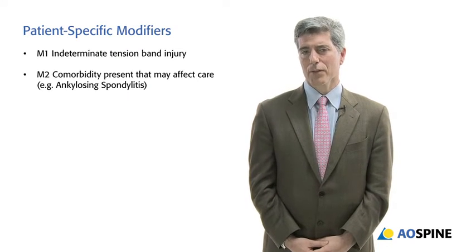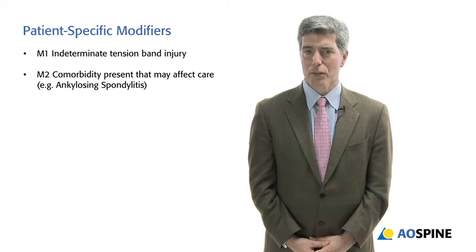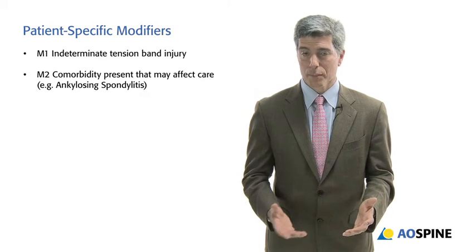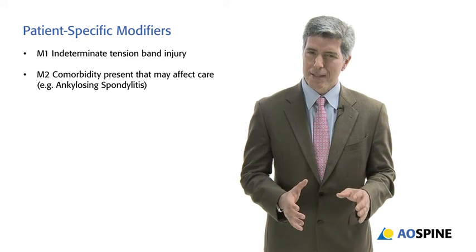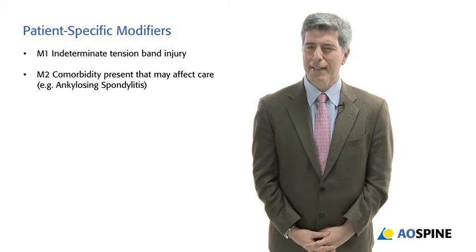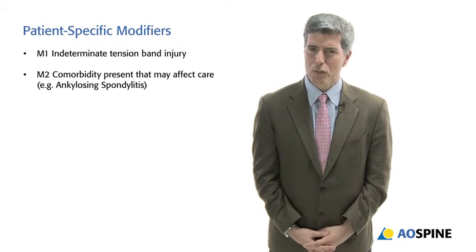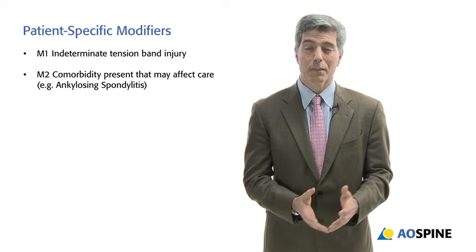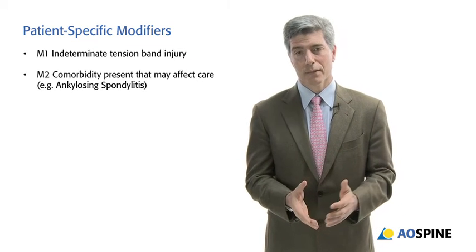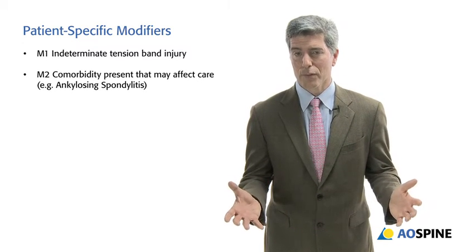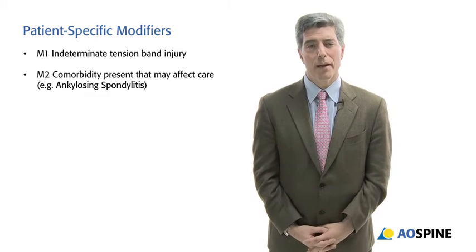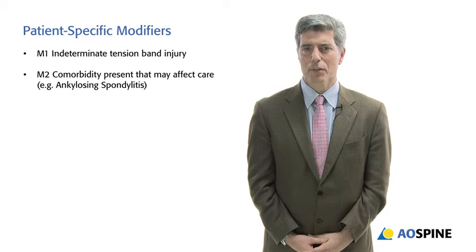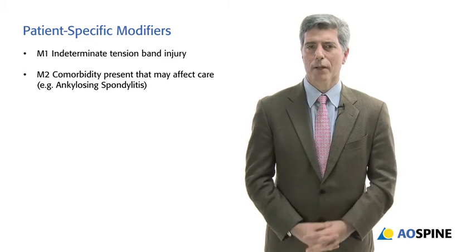There are also modifiers. If you have a distraction injury through the soft tissue, we call that a B2. Sometimes you get an MRI scan and you really can't tell if the soft tissue sleeve is disrupted. If it is, it may make it an unstable injury; if it's not, it may be a stable burst fracture. So we allow the surgeon to put a modifier if they think there may be a ligamentous disruption but they're not sure — that would be an M1.